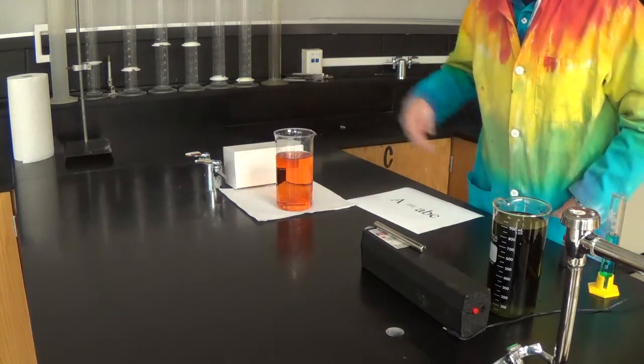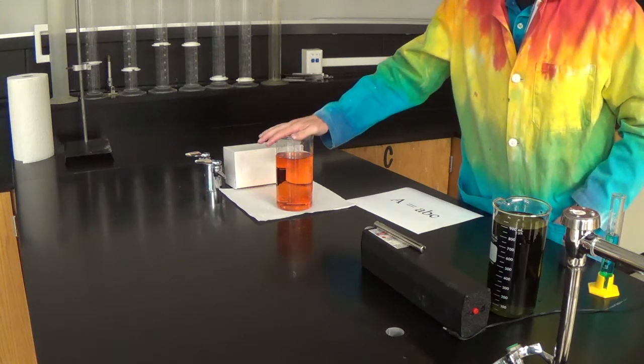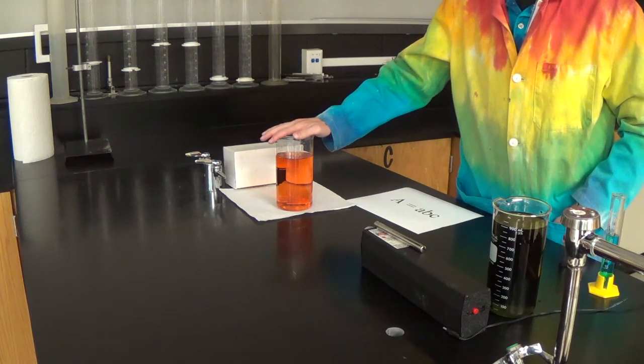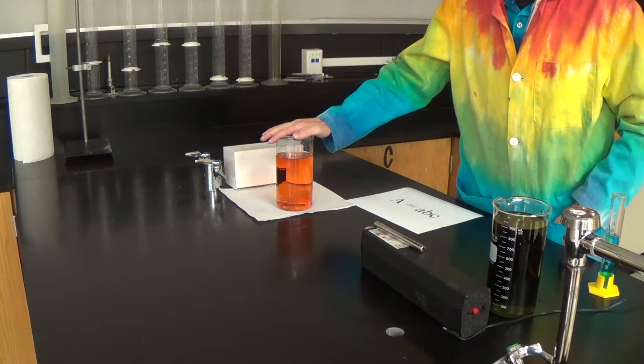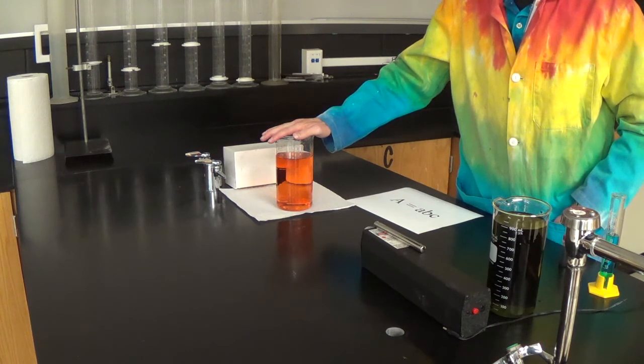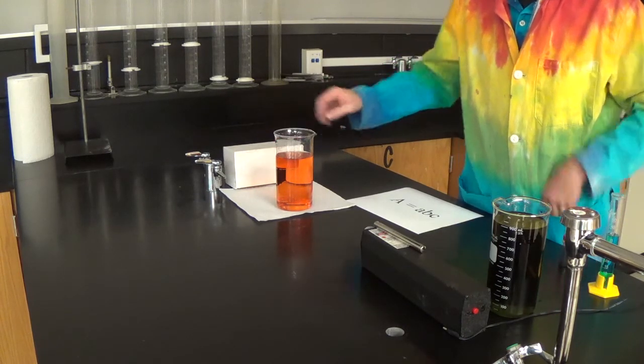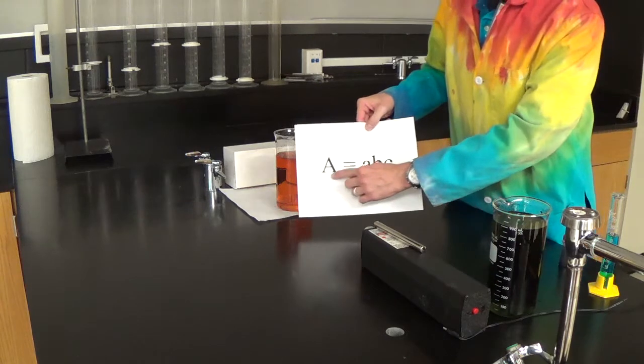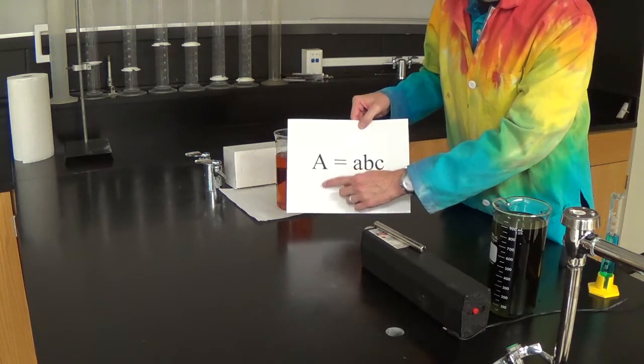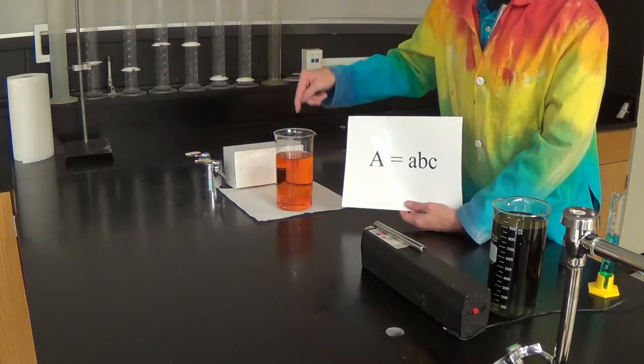So in lab if we get a situation where we want to test a sample, but the sample is absorbing too much light to fit into our Beer-Lambert curve, what can we do to make it fit, to cause the absorbance to decrease to fit into our curve? We can dilute it.